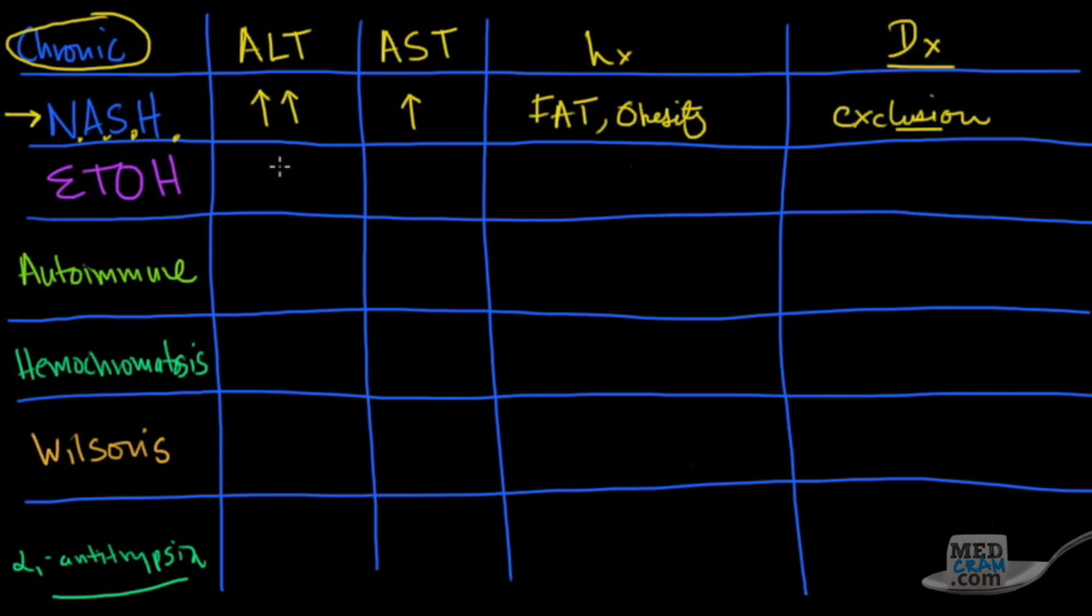As we said with alcohol, it's just backwards. The ALT is high, but the AST is what's elevated. The history is going to be that of ETOH, and it's also going to be of exclusion. You want to just make sure that you're not just subscribing somebody to the old alcohol reason for their liver disease. Make sure that, even though they're drinking, make sure you rule out the other things.